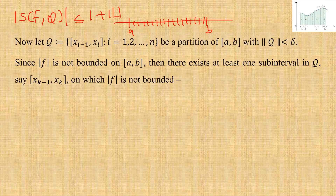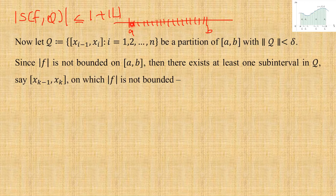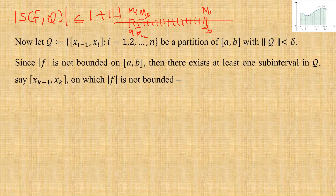Now we look at the assumption: f is an unbounded function. We have some sub-intervals. Even if some sub-intervals have f bounded, there are just some sub-intervals on which f may be unbounded. For the sub-intervals on which f is bounded — on this interval we have some bound m₁, on this interval m₂, on the third interval m₃, and on the nth interval a bound mₙ.